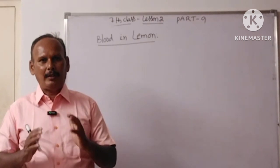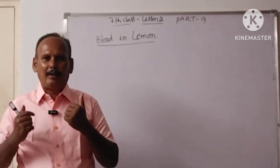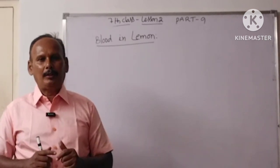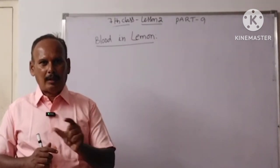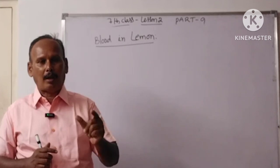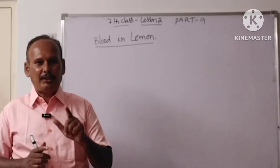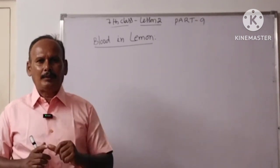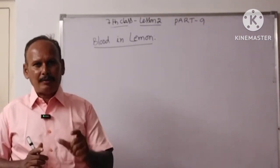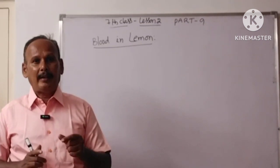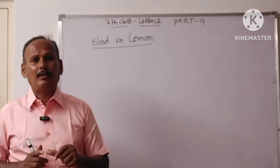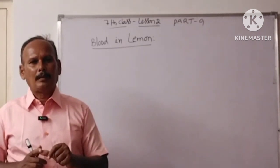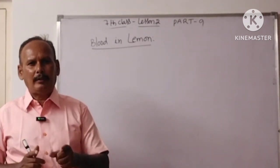Science means truth. We have to reveal the truth in Blood in Lemon. You might have seen tricks by magicians or jugglers — blood coming out from a lemon when they cut it with a knife. This is made possible by applying an indicator like methyl orange or hibiscus flower solution on the knife before cutting the lemon. This indicator reacts with lemon juice and turns it into red color.